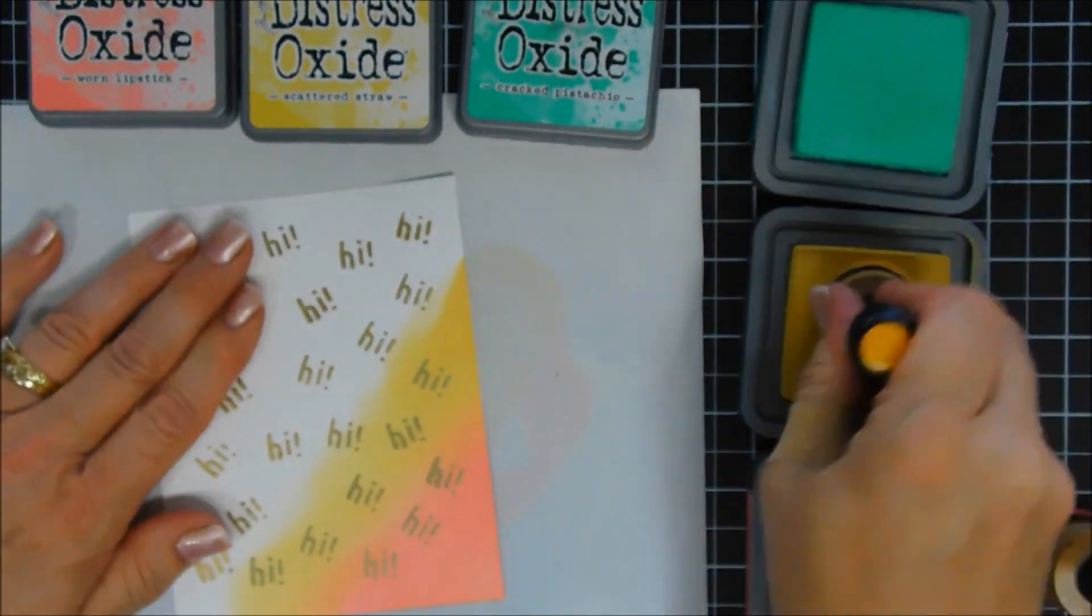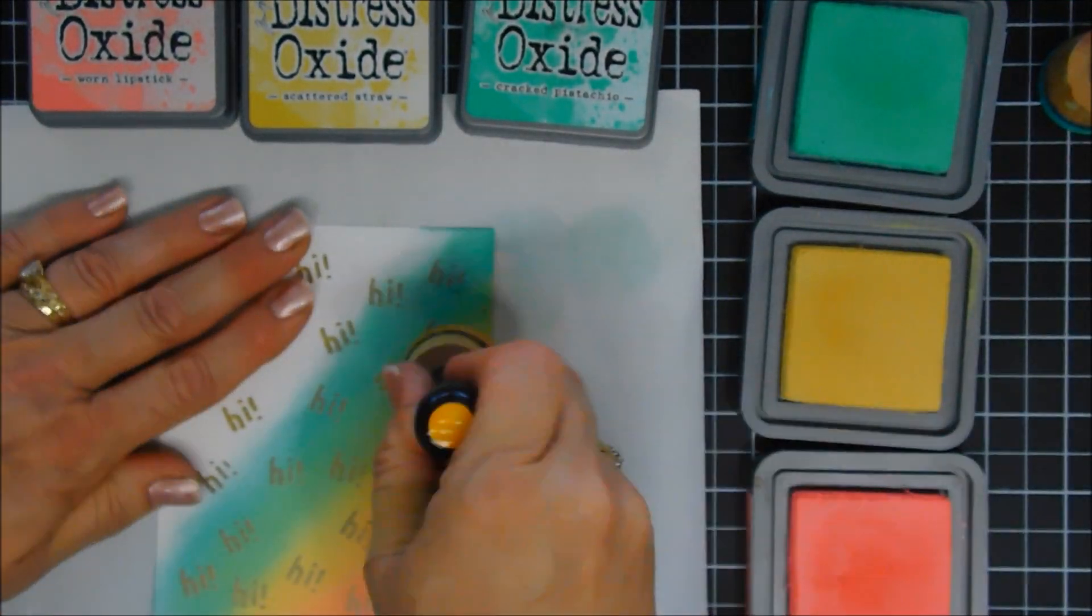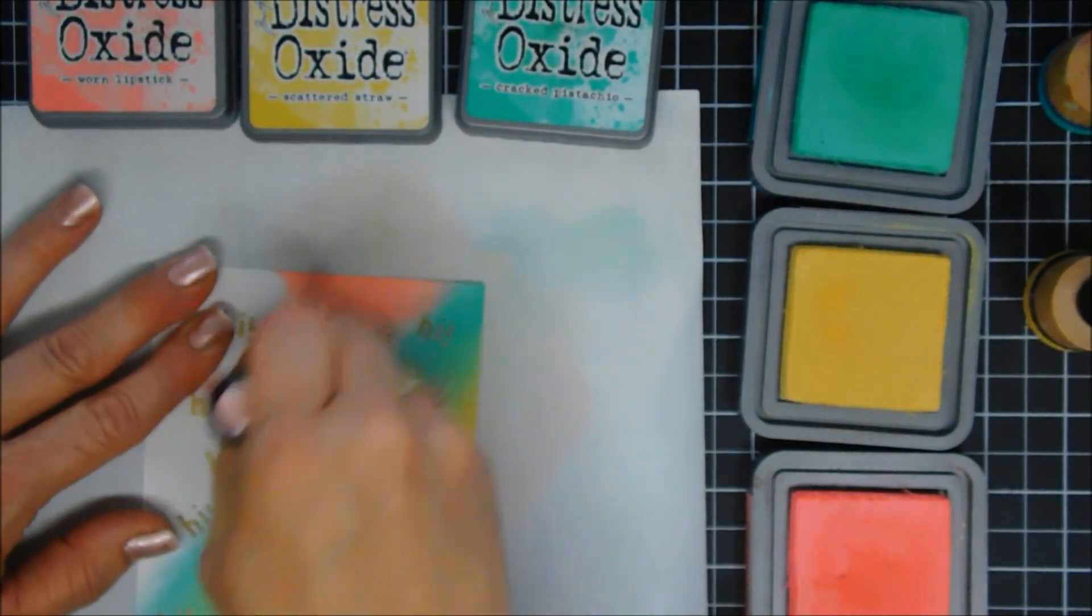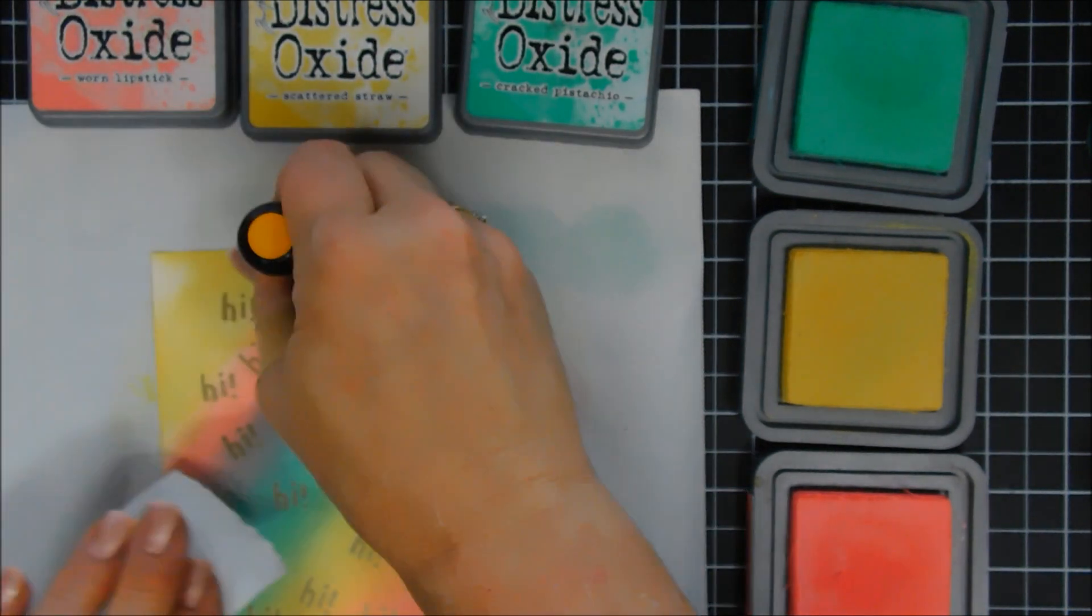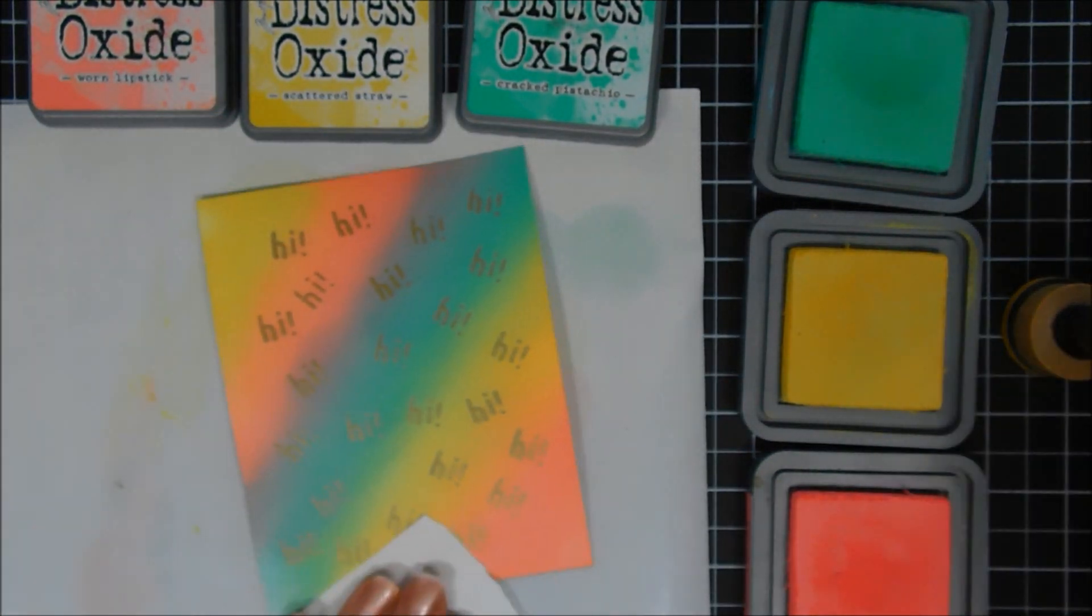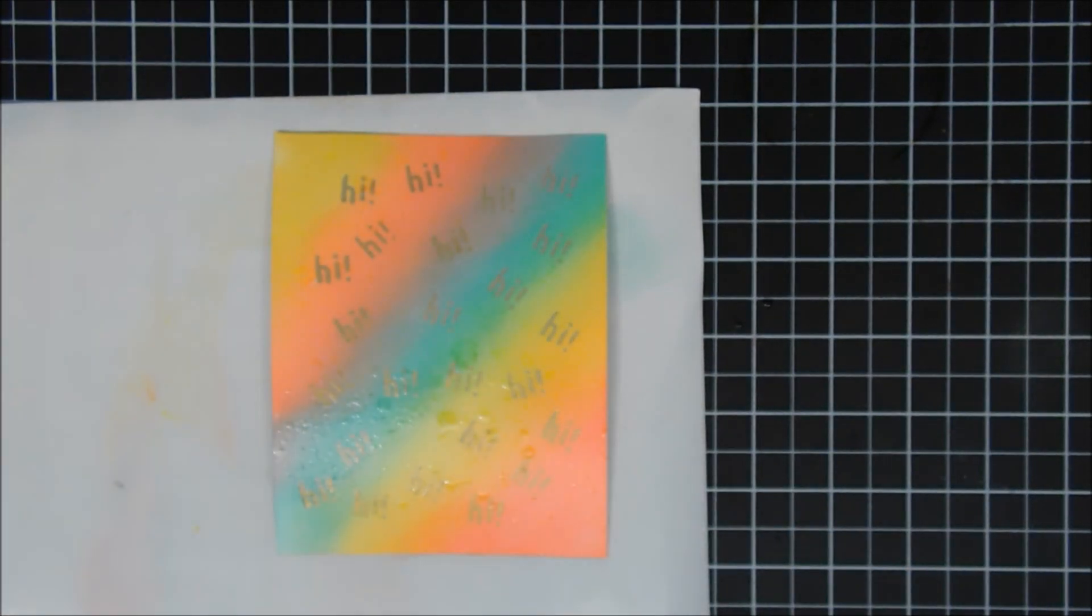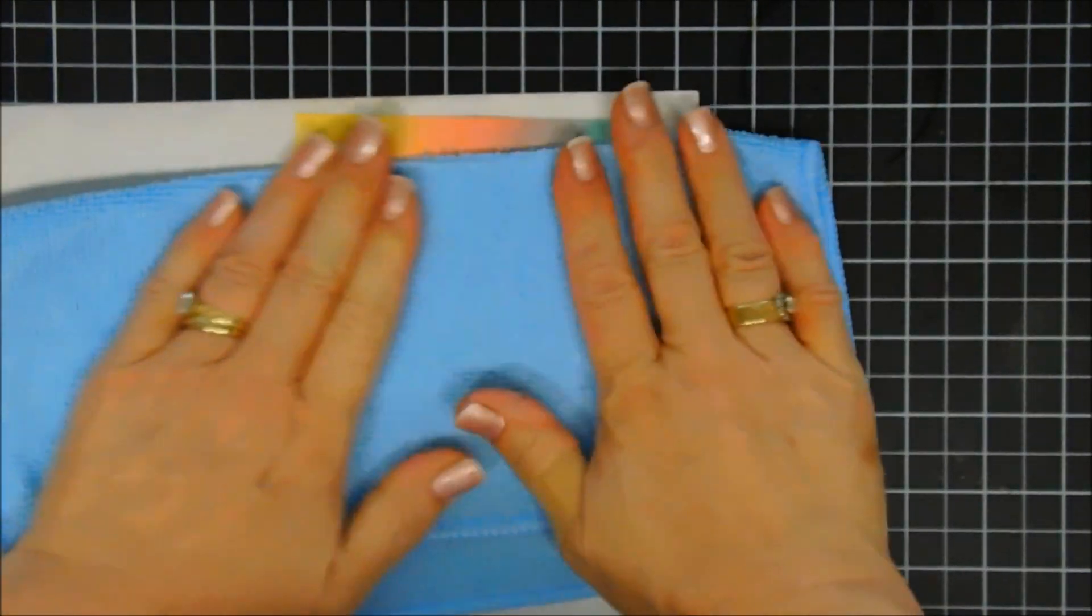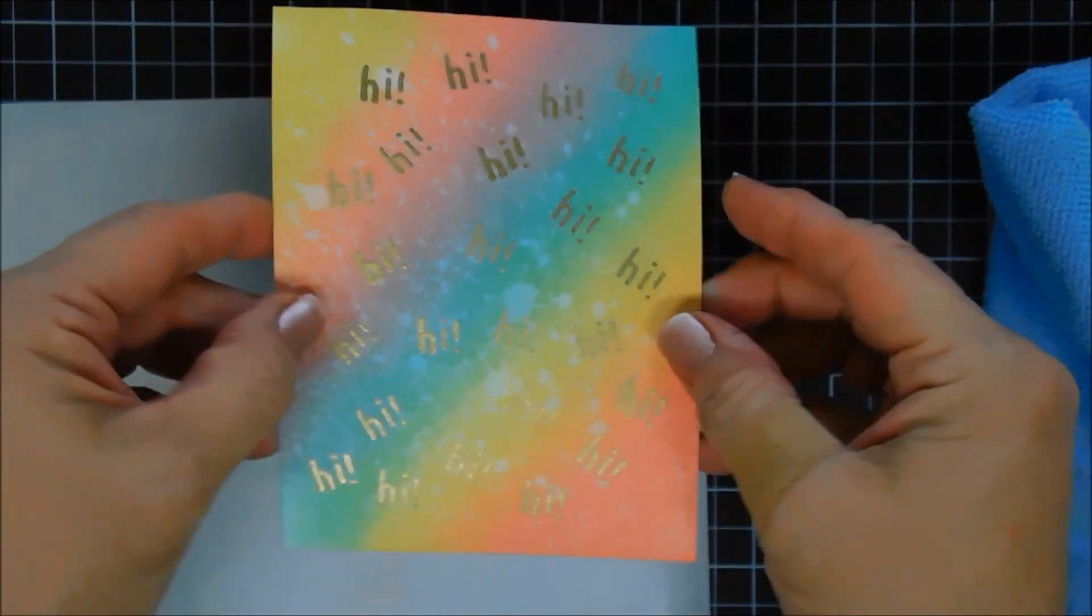And we're going to do ink blending with oxide inks. So I have three colors. First was Worn Lipstick, the second one is Scattered Straw, and then the third one was Cracked Pistachio. I thought these three colors create a nice little rainbow. So we're just covering the entire background, and I'm adding color at a diagonal so it looks like a little diagonal rainbow. Once I'm happy with the blending, I'm going to add some water droplets. I'll let that ink oxidize for a little bit, and then use my towel and pick up all the excess. And I think that creates a real fun background. And that gold just pops against those colors.